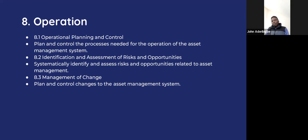Clause 8 is one of the major important aspects, talking about the operation of the asset management system. In operating the asset management system, the organization is expected to provide the needed controls. Most of the controls generated from the risk assessment must be implemented at this point — ensuring proper compliance, purchasing the needed equipment, training the necessary staff, among other controls that must be in place to ensure adequate management of assets in the organization.